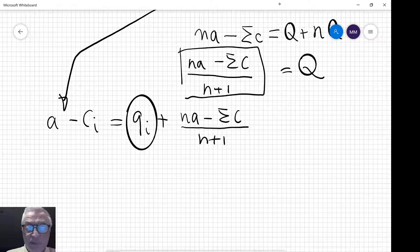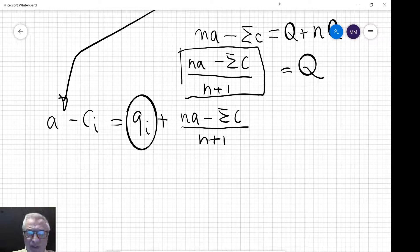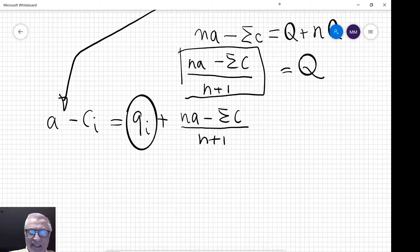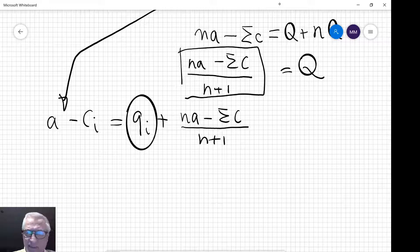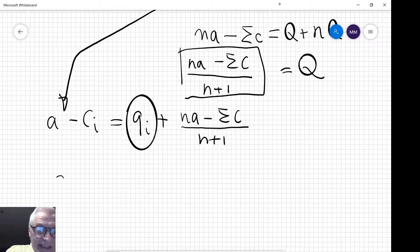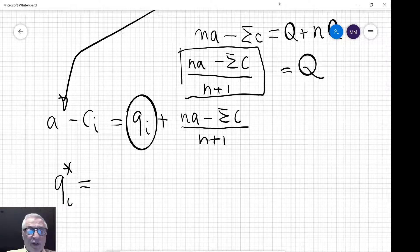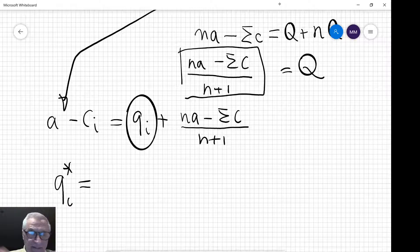So now it's just a matter of rearranging this and I will just give you the final result. The Cournot equilibrium level of output when we have a linear demand curve and firms with potentially different constant marginal costs will be given by...